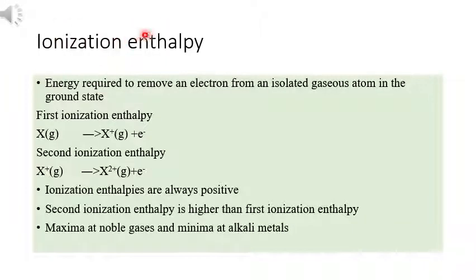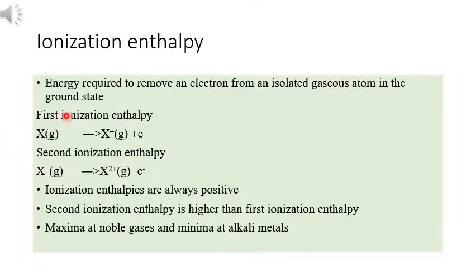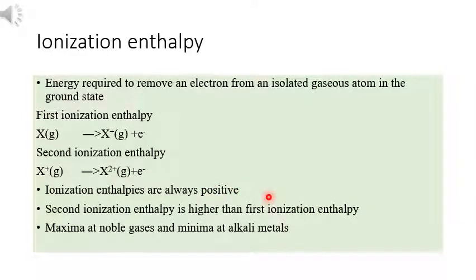Next is ionization enthalpy. Ionization enthalpy is the amount of energy required to remove an electron from an isolated gaseous atom in the ground state. For example, element X loses one electron to form X⁺ (first ionization enthalpy), and if it loses one more electron forming X²⁺, that is the second ionization enthalpy. Since energy is required, ionization enthalpy is always positive.